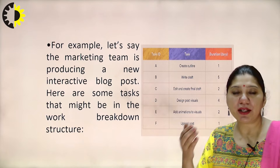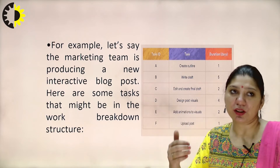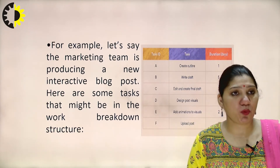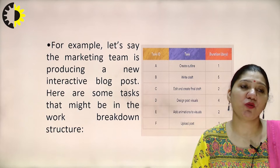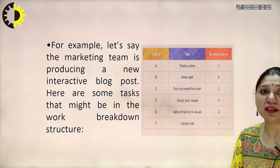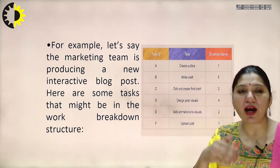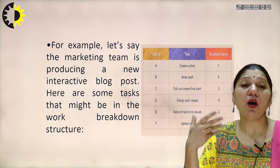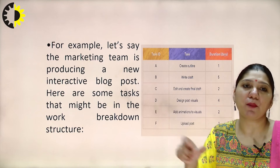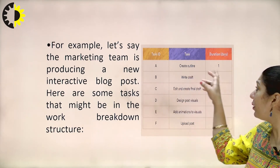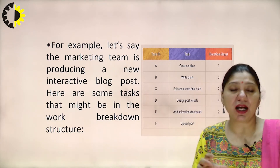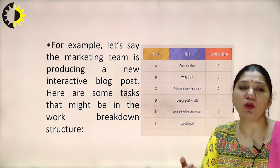For example, let's say the marketing team is producing a new interactive blog post. The first task, A, is to create the outline — what should happen in the project, giving it detail. The duration given is one day, during which we do the whole analysis and project understanding. The second task, B, is to write the draft of the project. First we do the analysis and identify what to do, then we produce a complete draft — the documentation of that project. The duration given is five days.